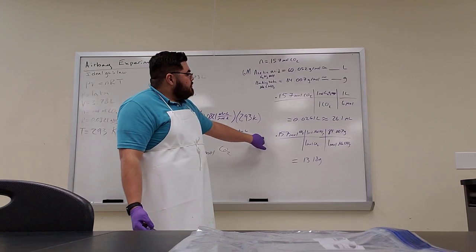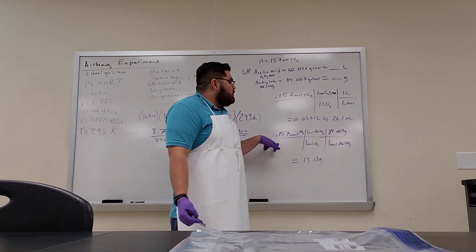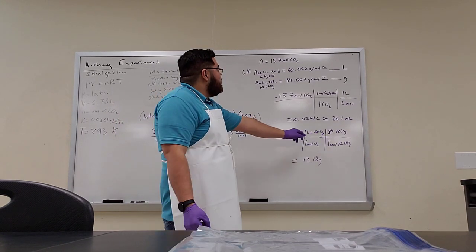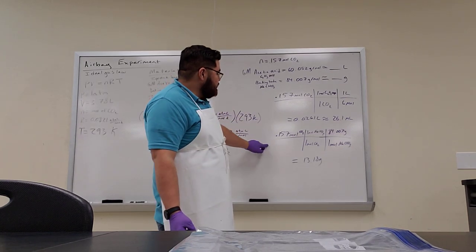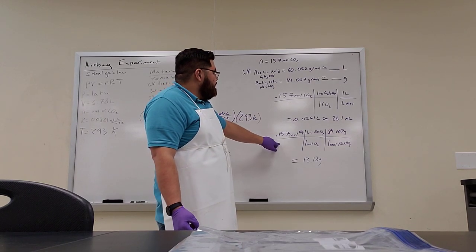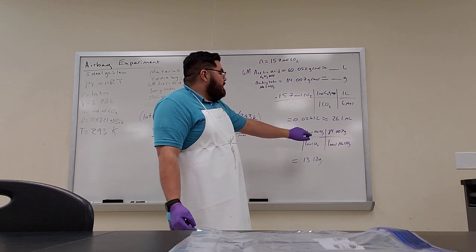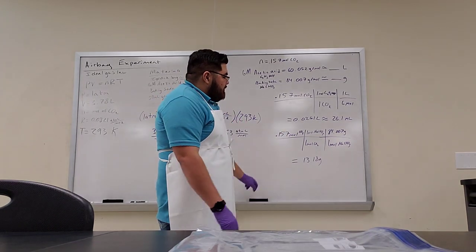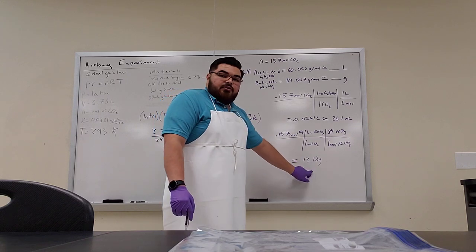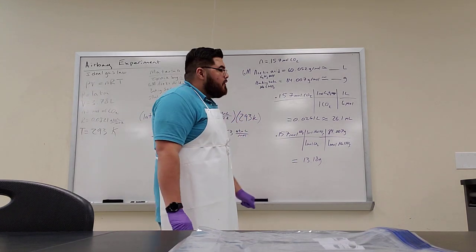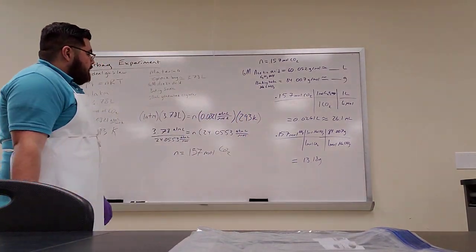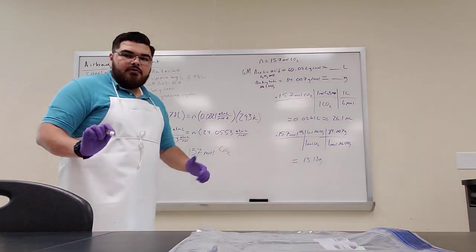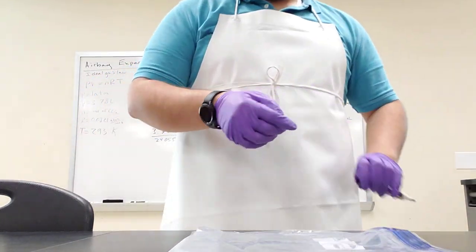The same is done for baking soda. You're going to use the moles of CO2 multiplied by the molar mass of baking soda. So your 0.157 is times 84.007 grams, and that gives us about 13.18 grams of baking soda that we're going to use. Yeah. Sounds good. Alright, let's start the experiment.